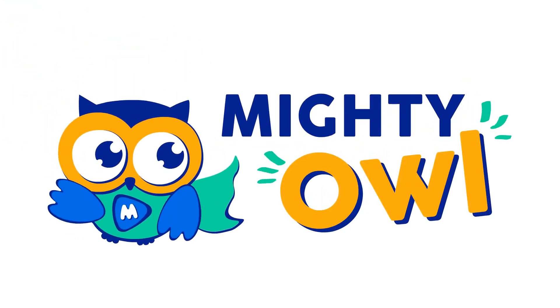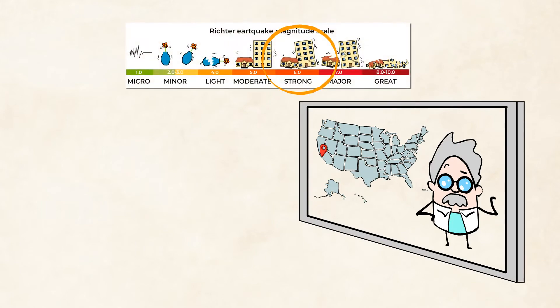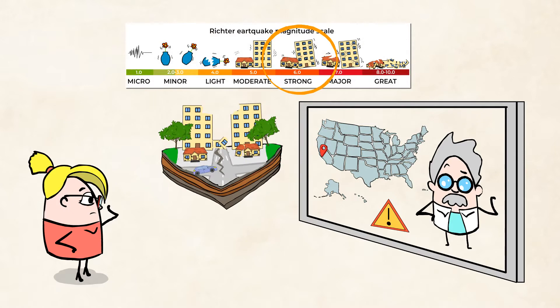Hello, this is Mighty Owl. A magnitude 6 hit Southern California today. There was some minor damage to some buildings. Thankfully, no one was injured.